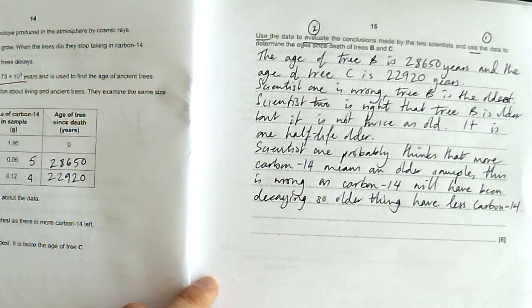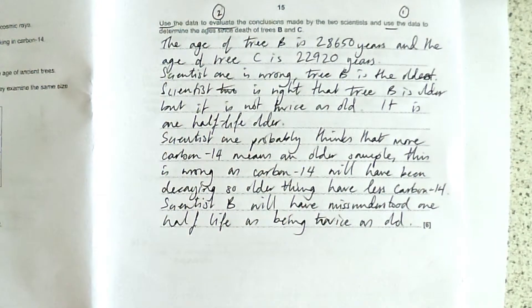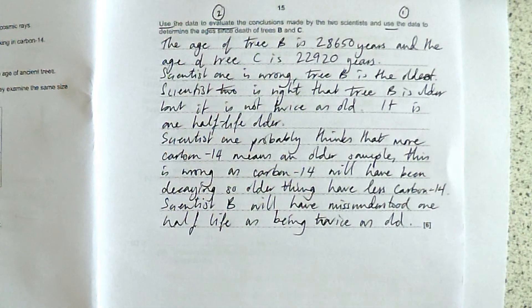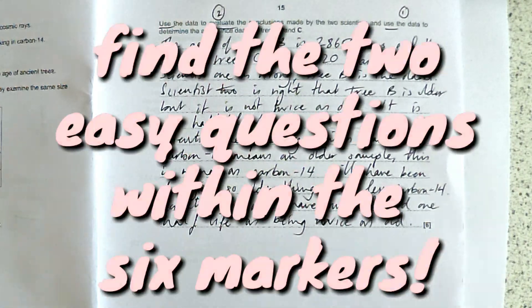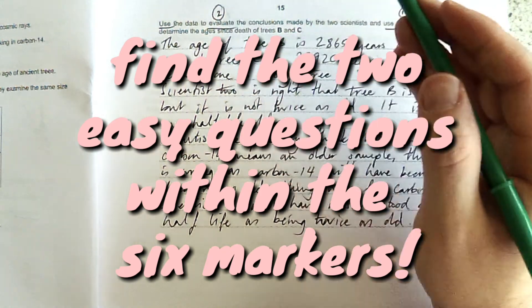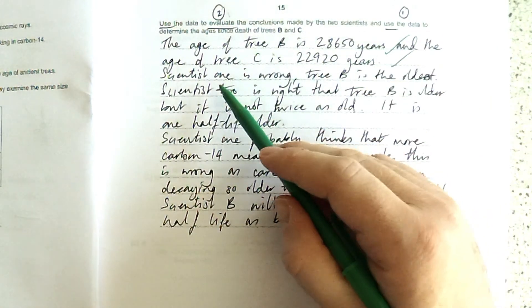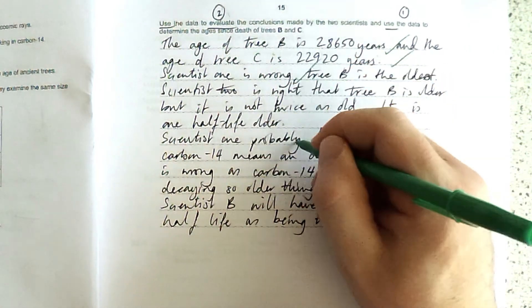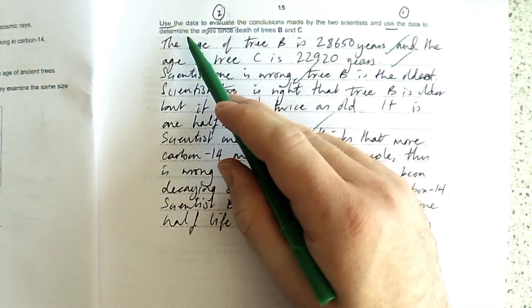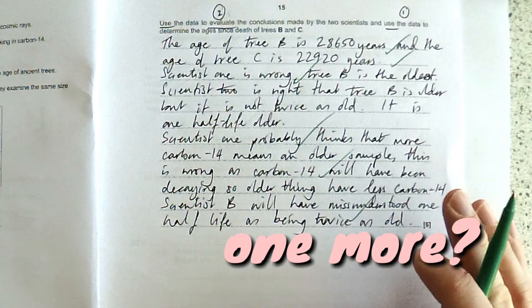So that's a pretty tricky question, I must admit. But the trick with these longer written questions is always to break it down into the smaller parts. And always be checking back here, have you done everything that the question asks you to do? Have you used the data to determine the ages? Yes, I have. Have you evaluated the two statements? Yes, I have. Have you used and referred to the data to explain why that is? Yes, I have.